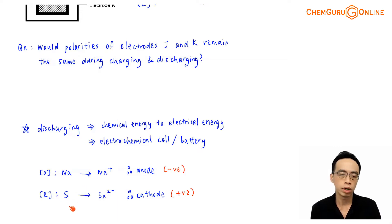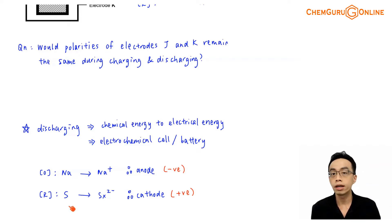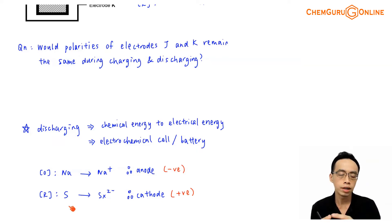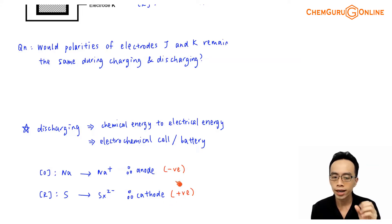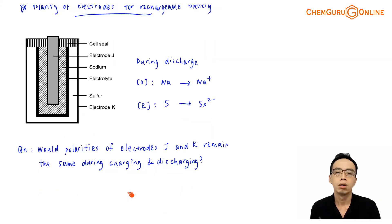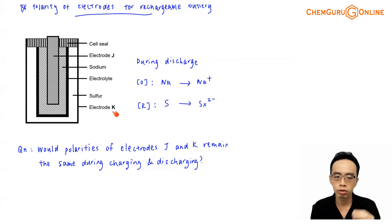Involving sulfur: sulfur undergoes reduction, and reduction is the gain of electrons. Sulfur will have to withdraw or gain electrons from the electrode. So the electrode in direct contact with the reduction site will be positively charged because it is losing electrons to the reduction of sulfur. This is why the cathode is positively charged for an electrochemical cell. Coming back to the diagram, electrode J — in direct contact with sodium — will be a negative charge, and electrode K — in direct contact with sulfur — will be a positive charge.